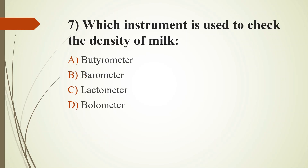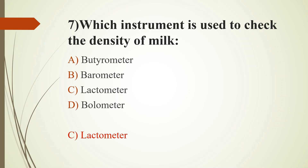Seventh question: Which instrument is used to check the density of milk? Option A: Butyrometer; Option B: Barometer; Option C: Lactometer; Option D: Bolometer. The answer is Option C: Lactometer. Butyrometer is used to detect fat content in milk; barometer is used to measure air pressure; and bolometer is used to measure radiation and heat of microwaves.